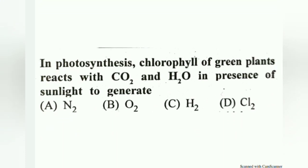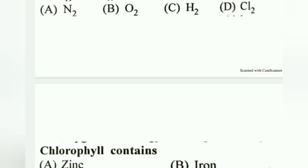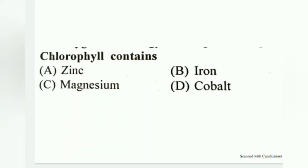In photosynthesis, chlorophyll of green plants reacts with carbon dioxide and H₂O in the presence of sunlight to generate oxygen. Chlorophyll contains magnesium.